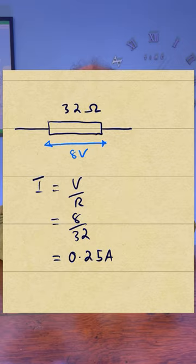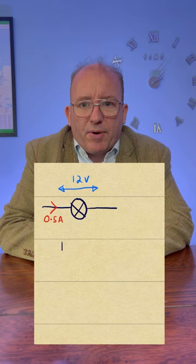This is a 12-volt lamp with a current of 0.5 amps flowing through it. What is its resistance? Well, R is V over I, so 12 volts over 0.5 amps gives us 24 ohms.